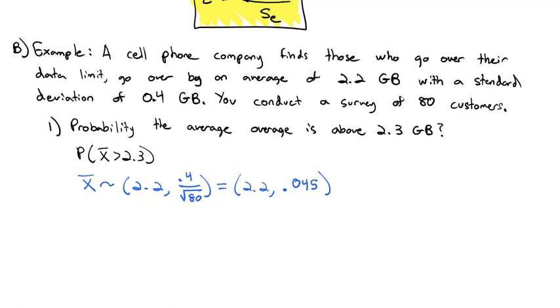That 0.045, that is our new standard error. So when we calculate our z score, we remember that z is x bar minus mu divided by the standard error.